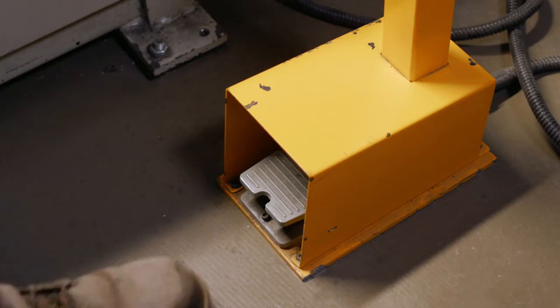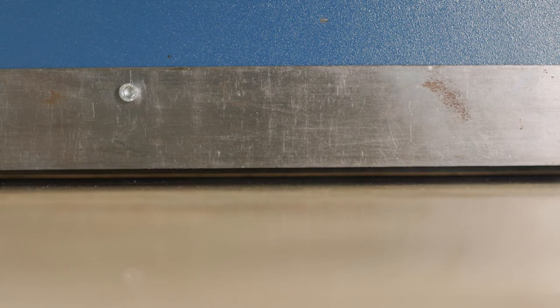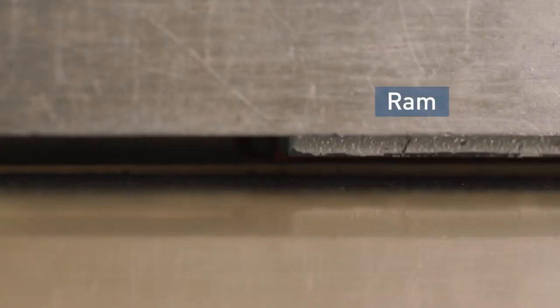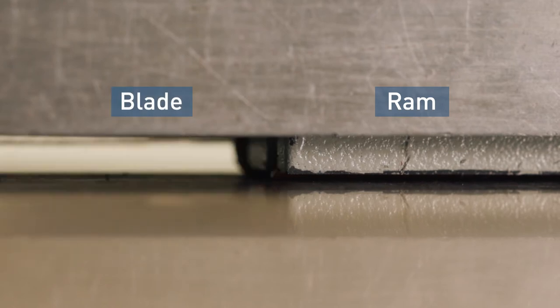There are several hydraulically operated rams that drop down to clamp the workpiece when you've set the workpiece at the correct position. This is followed by the blade lowering down and cutting the material.